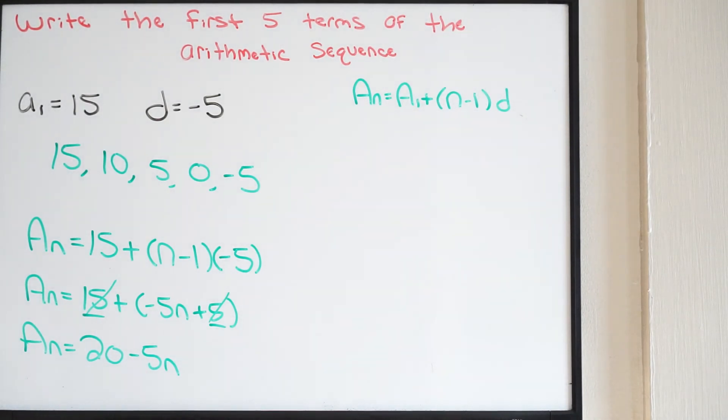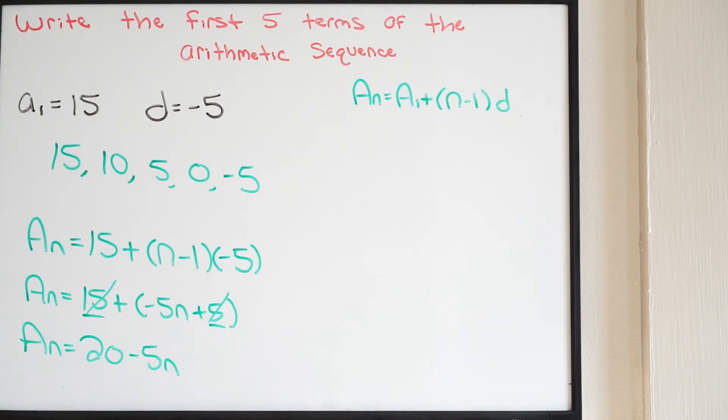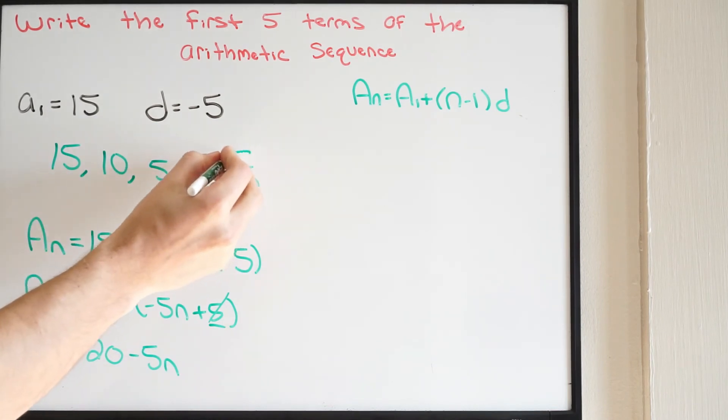So again, if I want to find, let's say, the fifth term in this arithmetic sequence, well, we know that's going to be 1, 2, 3, 4, 5, right here. This is going to be my fifth term.